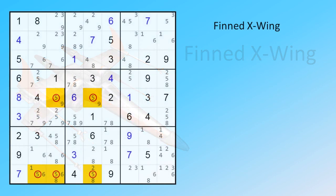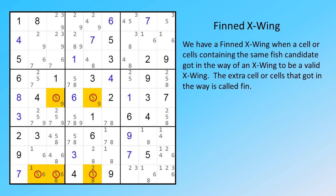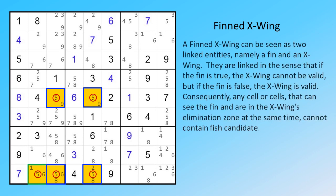Finned X-Wing. We have a finned X-wing when cells containing the same fish candidate got in the way of an X-wing, preventing it from being a valid X-wing. The extra cells that got in the way are called the fin. A finned X-wing can be seen as two linked entities, namely a fin and an X-wing. They are linked in the sense that if the fin is true, the X-wing cannot be valid, but if the fin is false, the X-wing is valid. Consequently, any cells that can see the fin and are in the X-wing's elimination zone at the same time cannot contain the fish candidate.